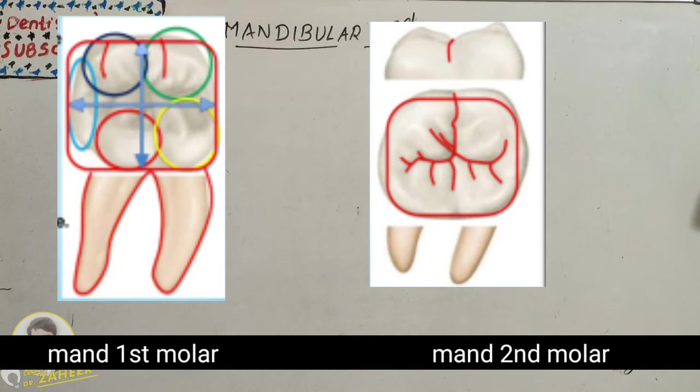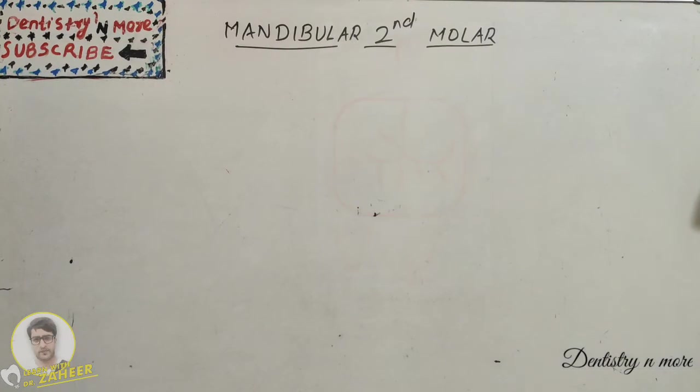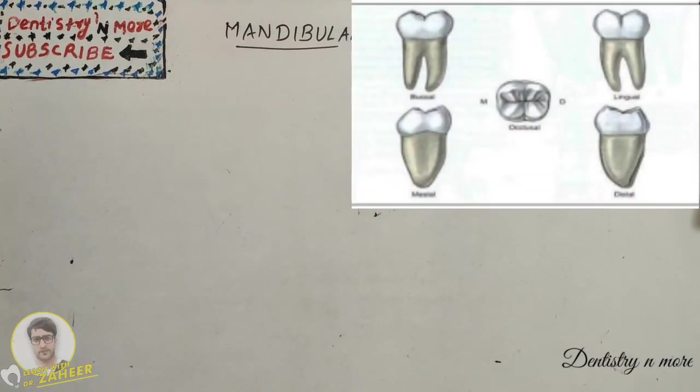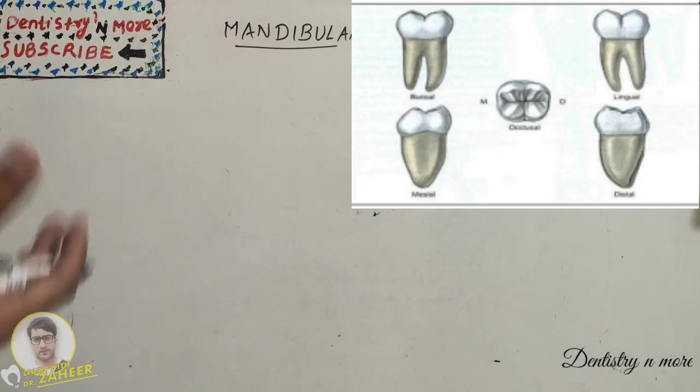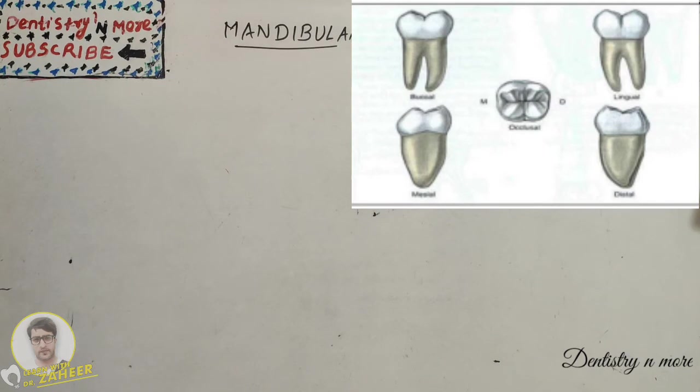Coming to mandibular second molar, many features are not very prominent. So mostly the maxillary first molar and mandibular first molars will be having most of the features.